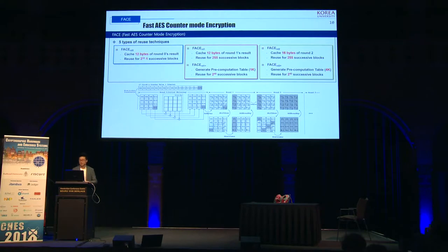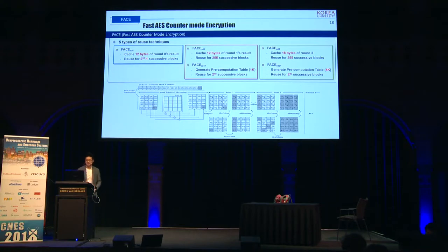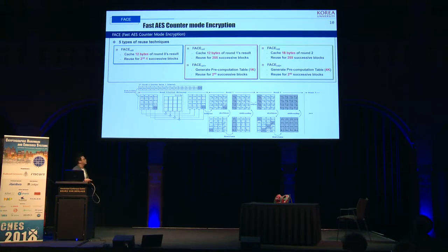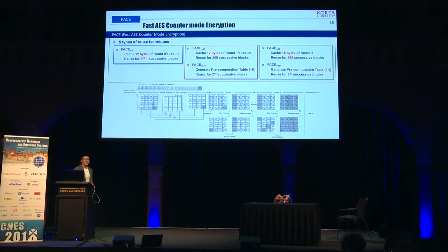Now I will explain our proposed method through post-techniques including previous ones. There are five types of caching technique, distinguished depending on the round to which they are applied. The figure at the bottom of this slide shows how the difference in the counter is spread by the round operation. As I mentioned before, the difference in the input counter between two successive blocks is just the last one byte, and at the end of round two this difference is spread to the full result.